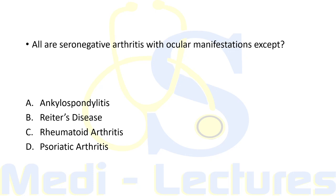Starting with our very first question: all are seronegative arthritis with ocular manifestations except. Options given are ankylosing spondylitis, Reiter's disease, rheumatoid arthritis, or psoriatic arthritis. Before answering this question we will discuss the detailed approach to a patient with arthritis, and we will see the differences between seropositive and seronegative arthritis.